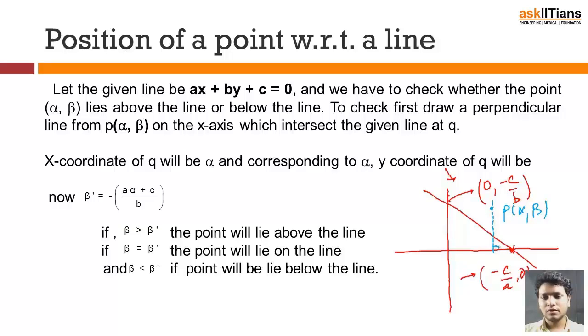This will be a line whose equation will be nothing but x equal to alpha, as you can see the value of x is always going to remain alpha on this line. So the point at which this line is going to intersect the given line, the x coordinate will be alpha.